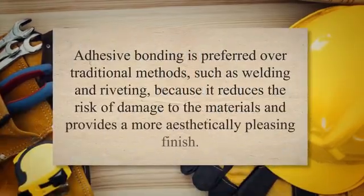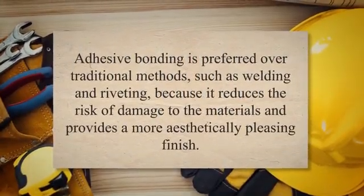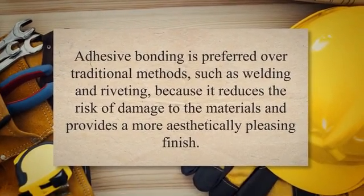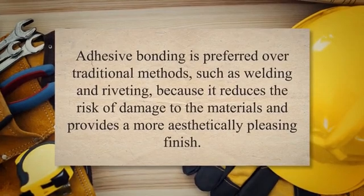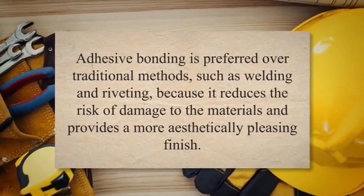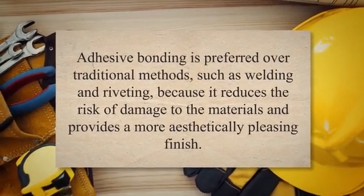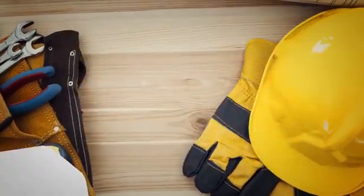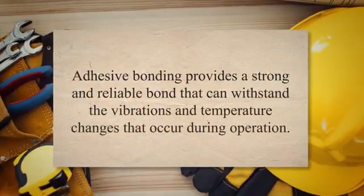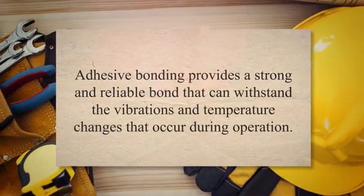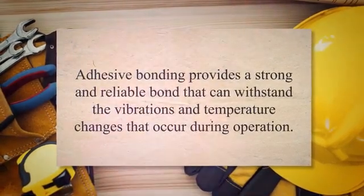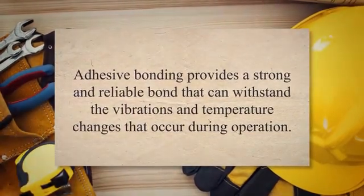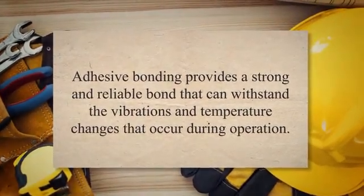In the construction industry, adhesive bonding is used to join building materials such as glass, metal, and concrete. It is preferred over traditional methods such as welding and riveting because it reduces the risk of damage to the materials and provides a more aesthetically pleasing finish. In the electronics industry, adhesive bonding is used to join components such as circuit boards and displays, providing a strong and reliable bond that can withstand the vibrations and temperature changes that occur during operation.